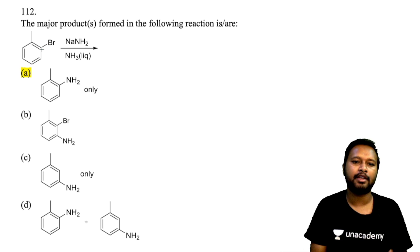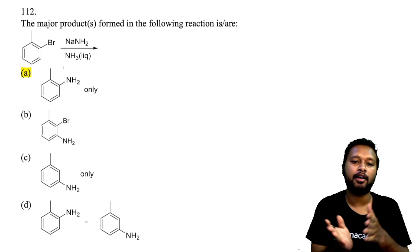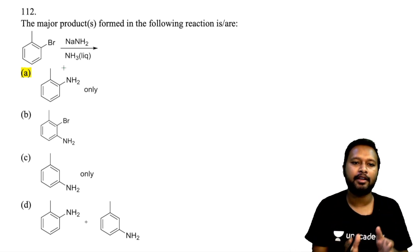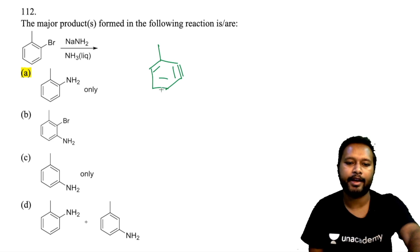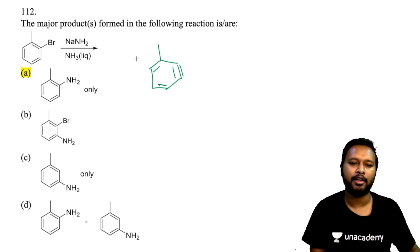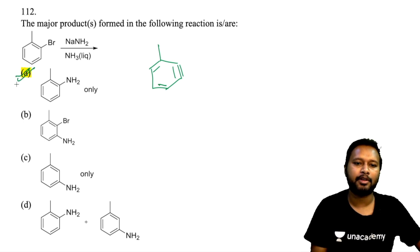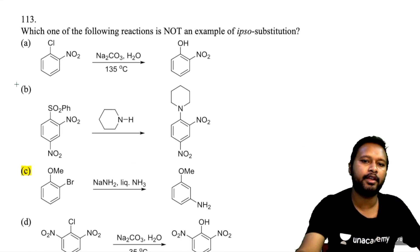Question 112: major product involving benzyne formation. The reaction proceeds through a benzyne intermediate. The NH₂ group then attacks — being electron-donating, it directs the incoming group to the ortho position relative to the existing substituent. Option A is the final product.